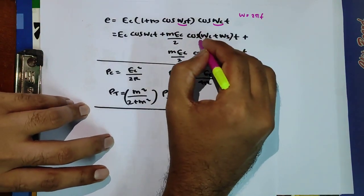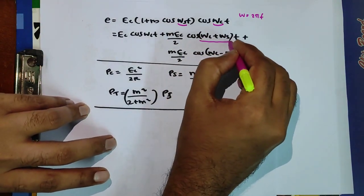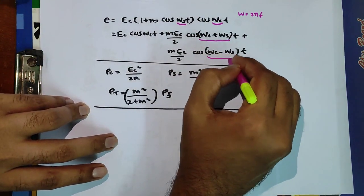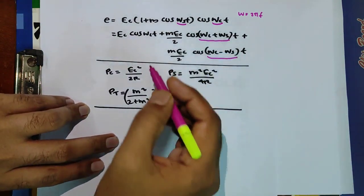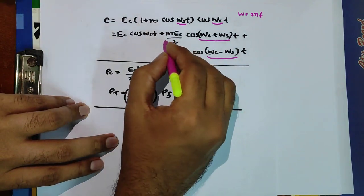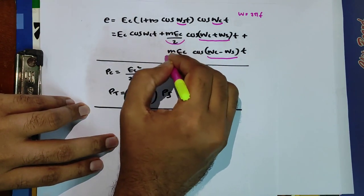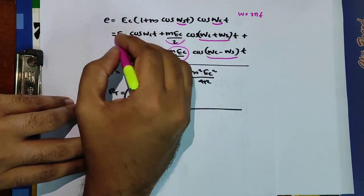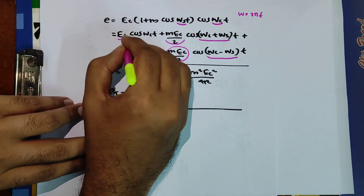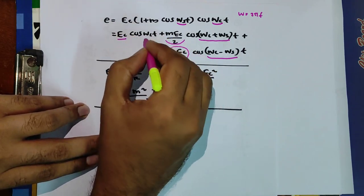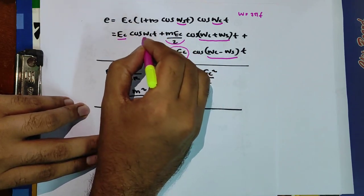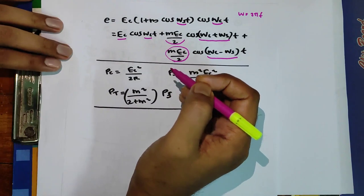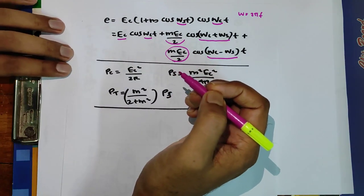Here, this frequency term is the lower sideband frequency. The amplitude of the upper sideband and the amplitude of the lower sideband frequency are mEc/2 each, and the amplitude of the carrier wave corresponds to Ec, with ωc being the angular frequency of the carrier wave.